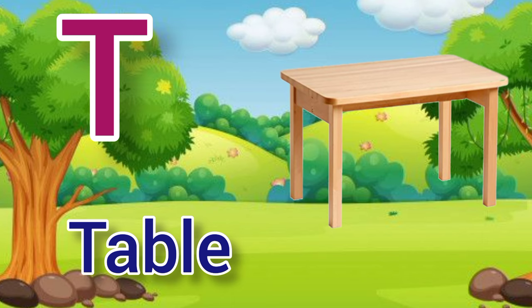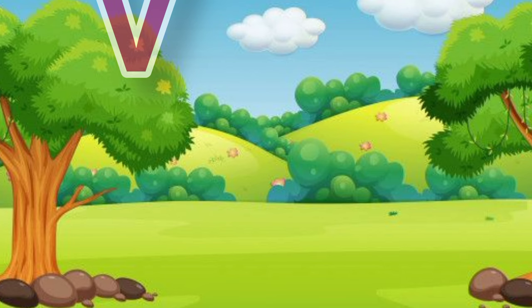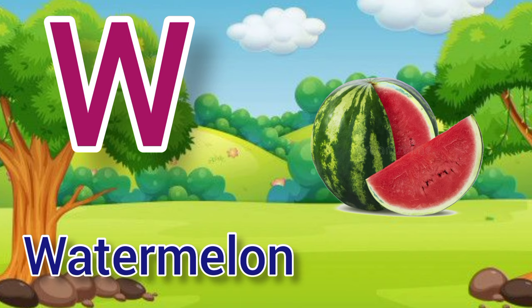U. U for under, under means neechi. V. V for vulture, vulture means get. W. W for watermelon, watermelon means tarbuj.